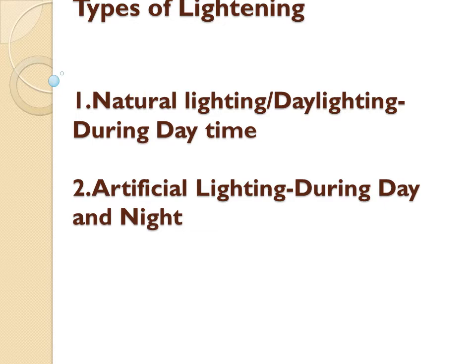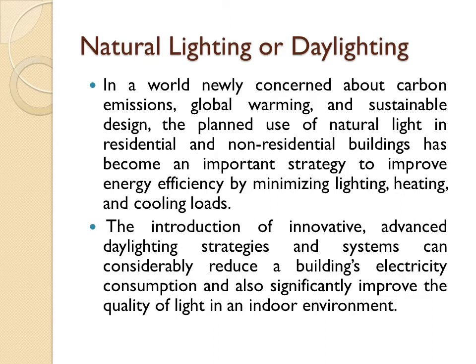Lighting is classified into two main subcategories: the first is natural lighting, also called daylighting, and the second is artificial lighting, which must be integrated with the daylighting system in any building. Natural light and daylight are available during the daytime, and artificial light must be used during cloudy days and at night.